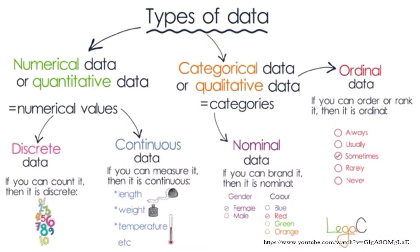Variable or data consists of two types: qualitative and quantitative. Numerical or quantitative data has numerical values and two subtypes: discrete and continuous. If you can count it, it is discrete – for example, number of daily admissions or number of women. If you can measure it, it is continuous – for example, height or weight. Qualitative data also has two types: nominal and ordinal.